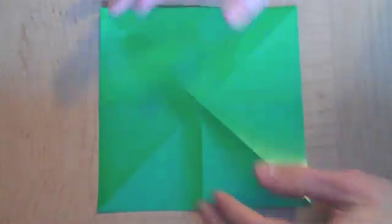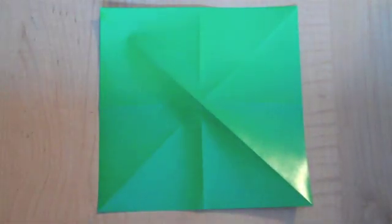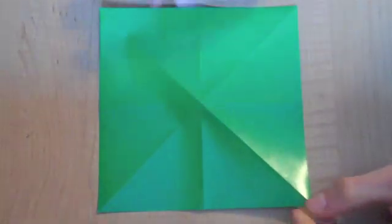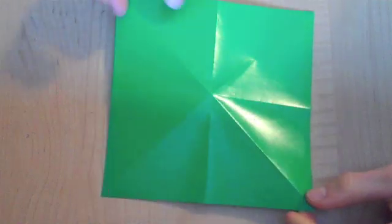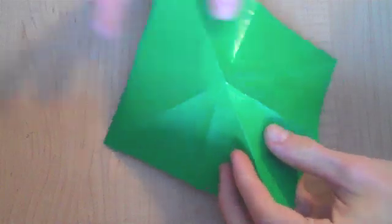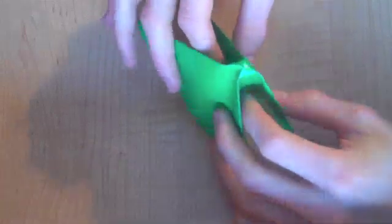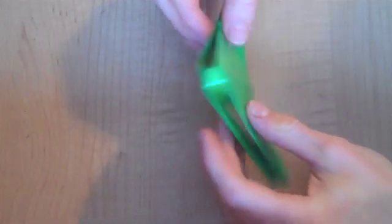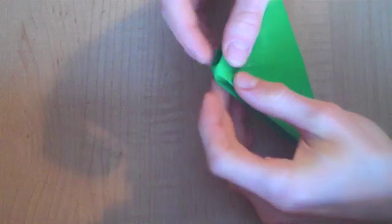Then unfold it. That is step one. For step two, simply take it so the creases are up and fold it in a way so that it makes a three-dimensional star shape, and then push it down on the corners so you get it like this.